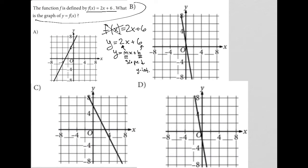So which of these graphs has a y-intercept at 6 and a slope that goes up 2 over 1? Because, if you recall, slope is rise over run.